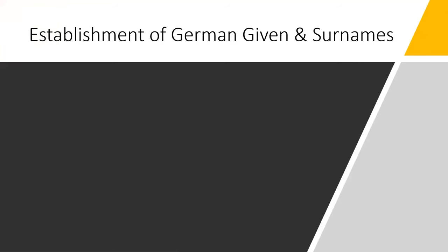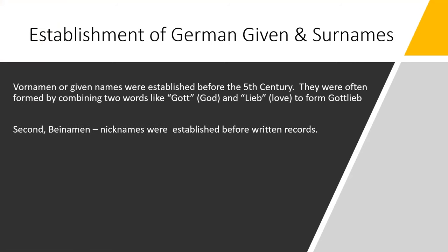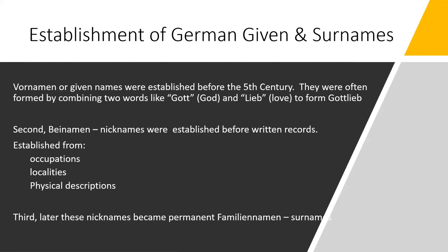The establishment of German given names and surnames. First, four nomen or given names were Germanic and established before the fifth century. They were often formed by combining two words, like Gott for God and Lieb for love to form Gottlieb. Second, binomen or nicknames were established before written records. They were often derived from occupations, localities, and a person's physical description. Third, later these nicknames became permanent familia nomina, or surnames.